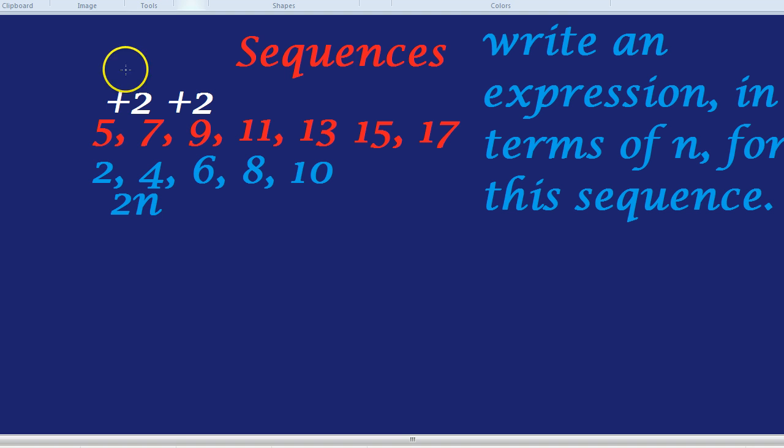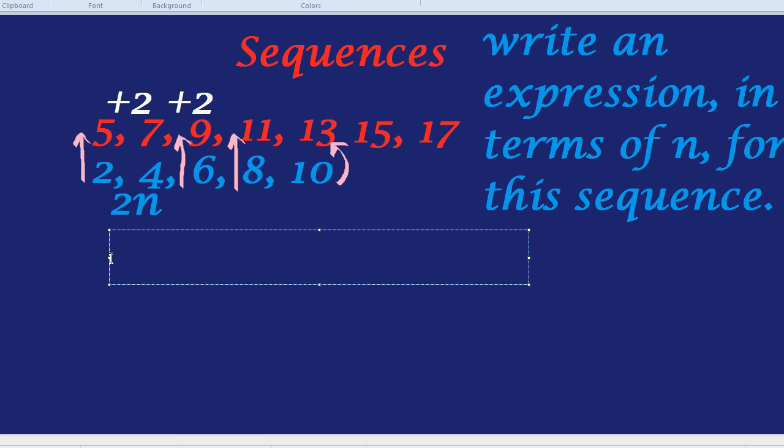What do we have to do to that 2 times tables, that 2n, to turn it into the sequence we had of 5, 7, 9, 11? If you notice, we always have to do the same thing to get from the numbers on the bottom to the numbers on the top. What do we have to do? We have to add 3. 2 plus 3 is 5. 4 plus 3 is 7. So, an expression in terms of n for this sequence would be 2n plus 3.